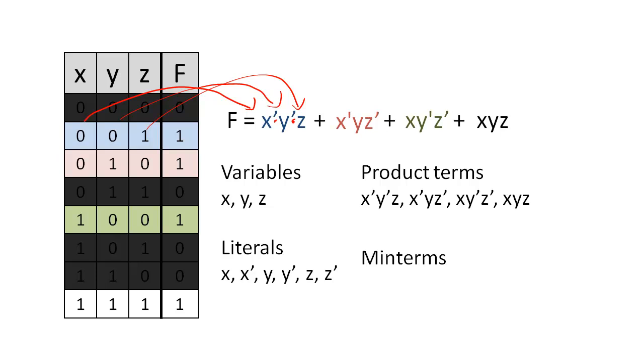We number minterms for convenience, and so the number of the minterm corresponds to the binary number of the row that generated the product minterm. So this is minterm one, minterm two, minterm four, and minterm seven.